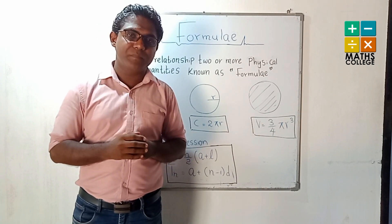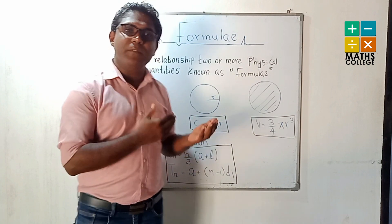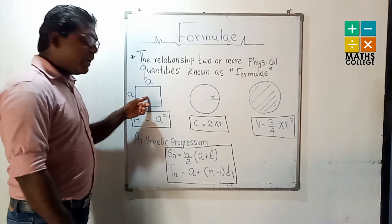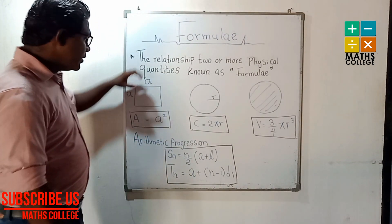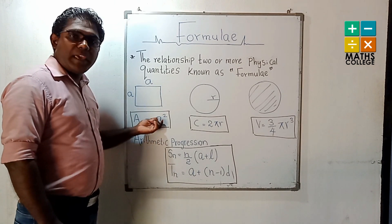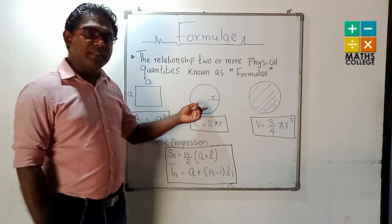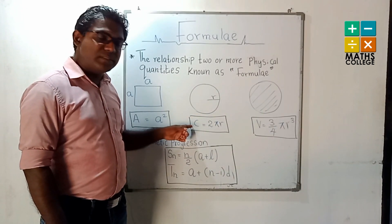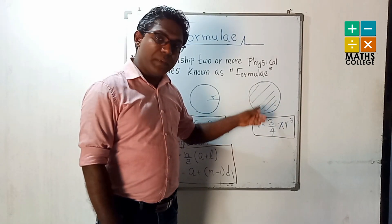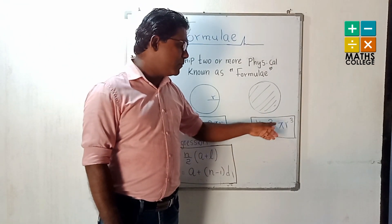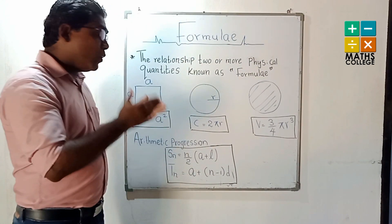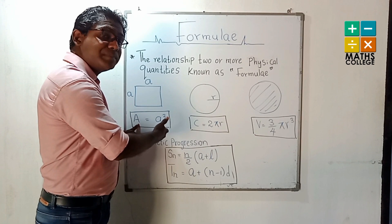We can explain this with the following examples. You can see here some plane figures. For a square, the length of side is 'a', so the area of a square is a × a = a². For a circle, C means circumference: circumference equals 2πr. According to your previous knowledge, here is the formula of a sphere. These are examples of formulas, and these are also physical quantities.